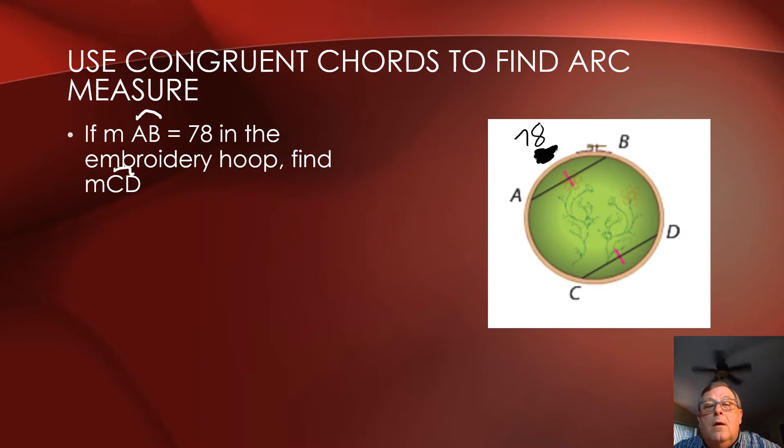The measure of arc AB is equal to 78. So that arc created by the chord AB, segment AB, at points on the circle, is 78. And then it says, find the measure of arc CD.